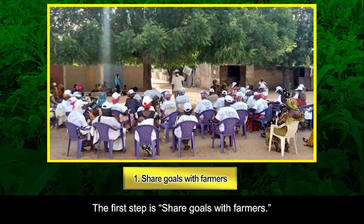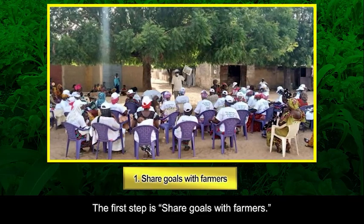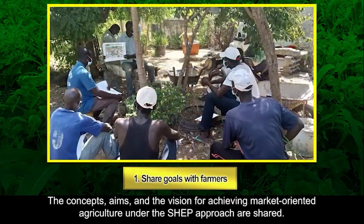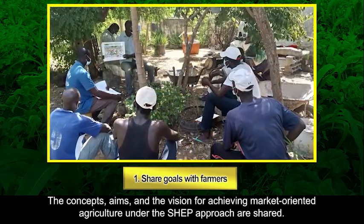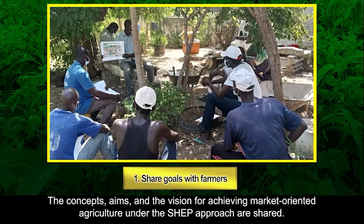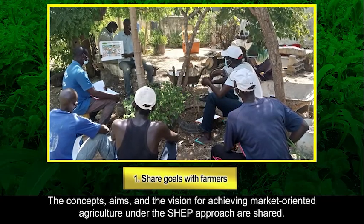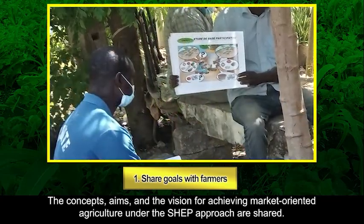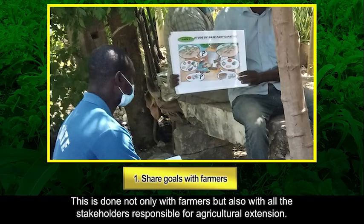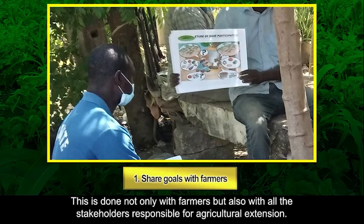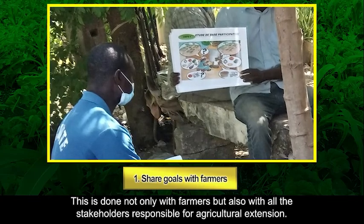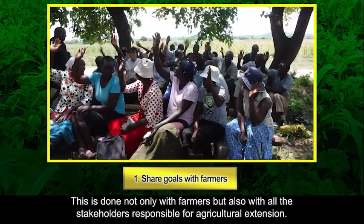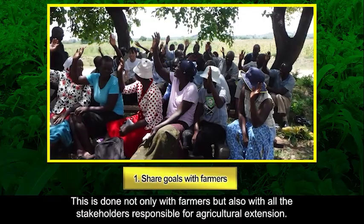The first step is share goals with farmers. The concepts, aims, and the vision for achieving market-oriented agriculture under the SHEP approach are shared. This is done not only with farmers but also with all the stakeholders responsible for agricultural extension.